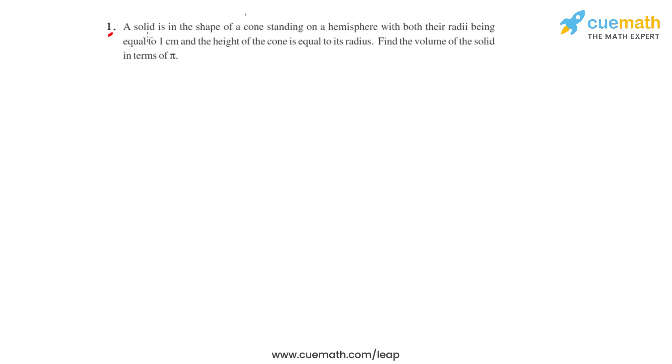Question number one of this exercise says that a solid is in the shape of a cone standing on a hemisphere, with both their radii being equal to 1 centimeter and the height of the cone equal to its radius. We have to find the volume of the solid in terms of pi.